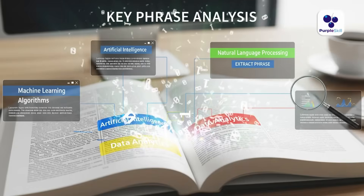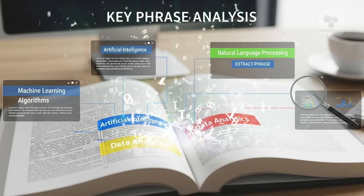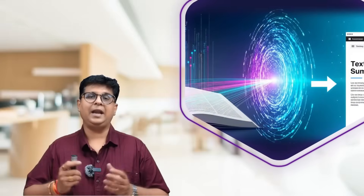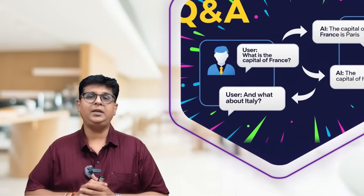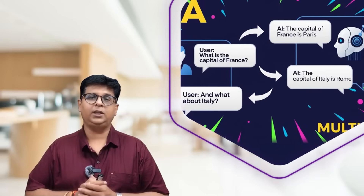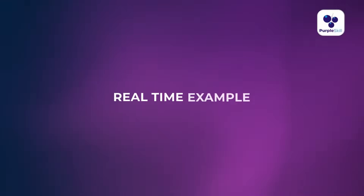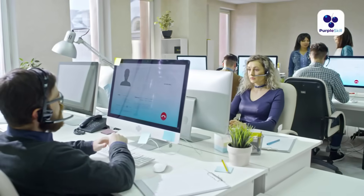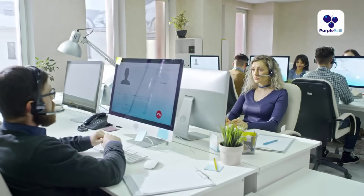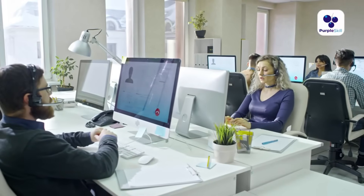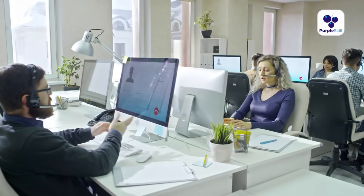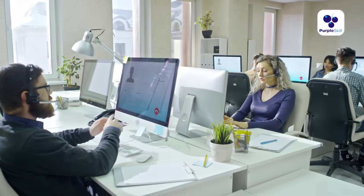In Keyphrase Extraction, we extract important keywords and important content from a document or text. With Summarization, we can condense a lengthy text into a small summary. With Q&A, we can have structured question and answer interactions with the user. For a real-time example, say we are running a support center with global customers. We can auto-translate their queries, detect if they are frustrated, and summarize long complaints for faster resolution.